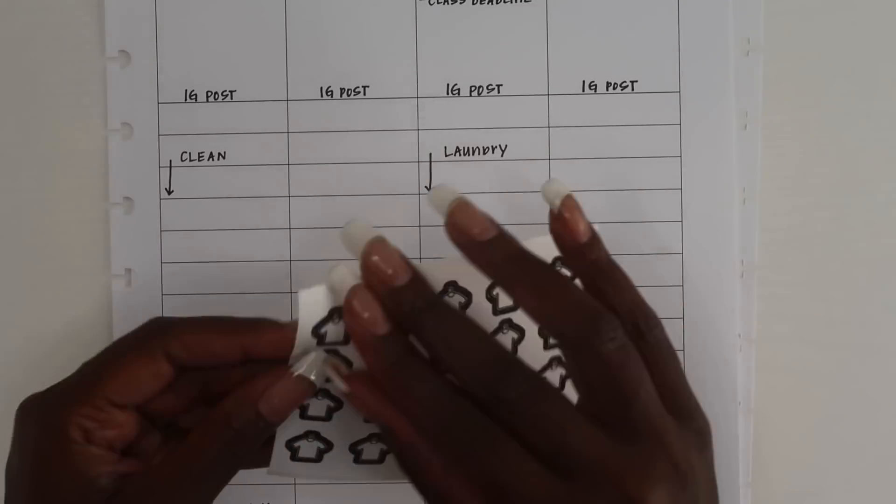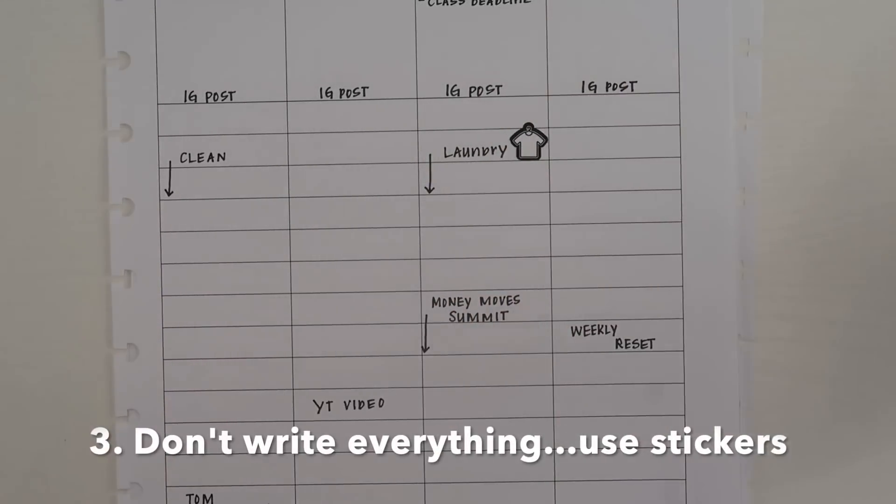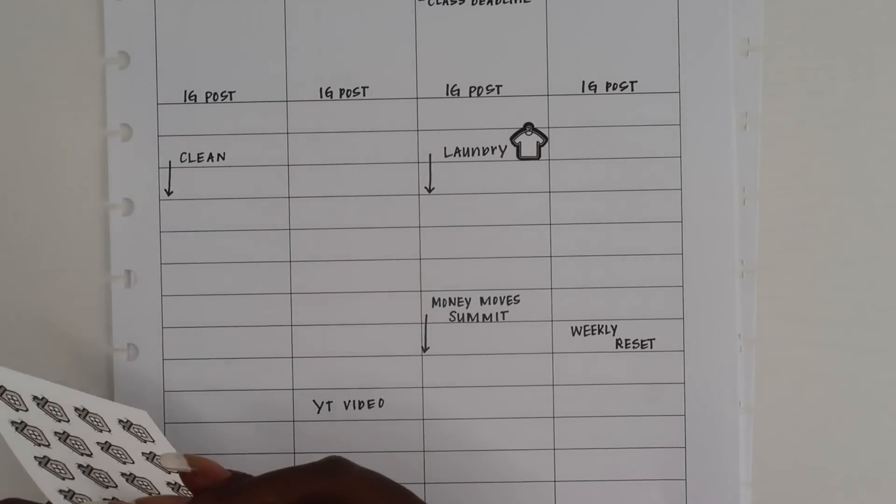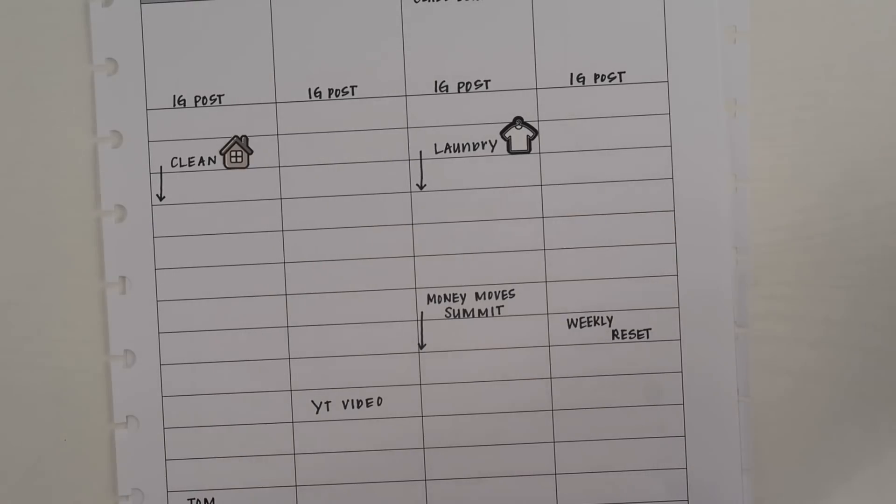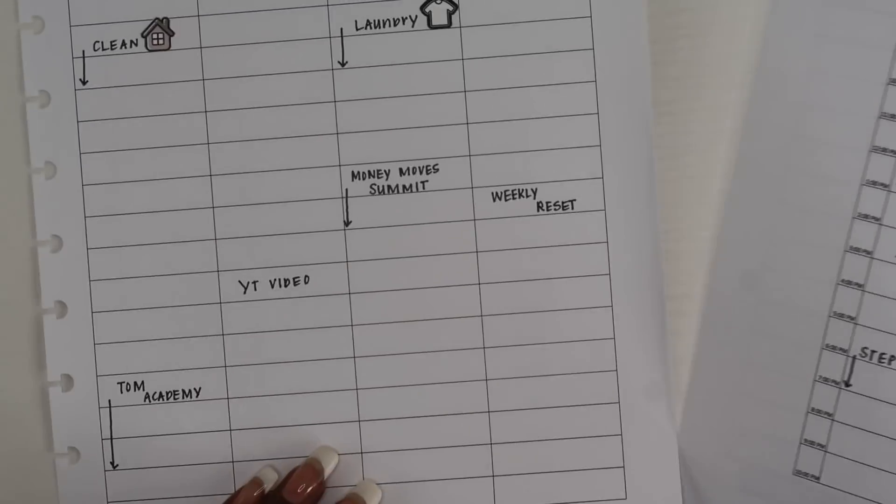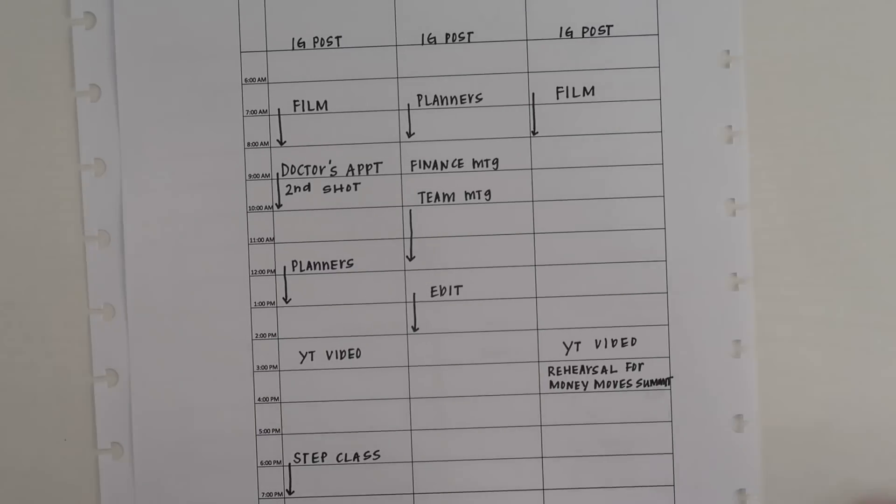My third tip is to use stickers in order to signal your brain and let yourself know when you have something that you have to do and you don't have the space to write for it.